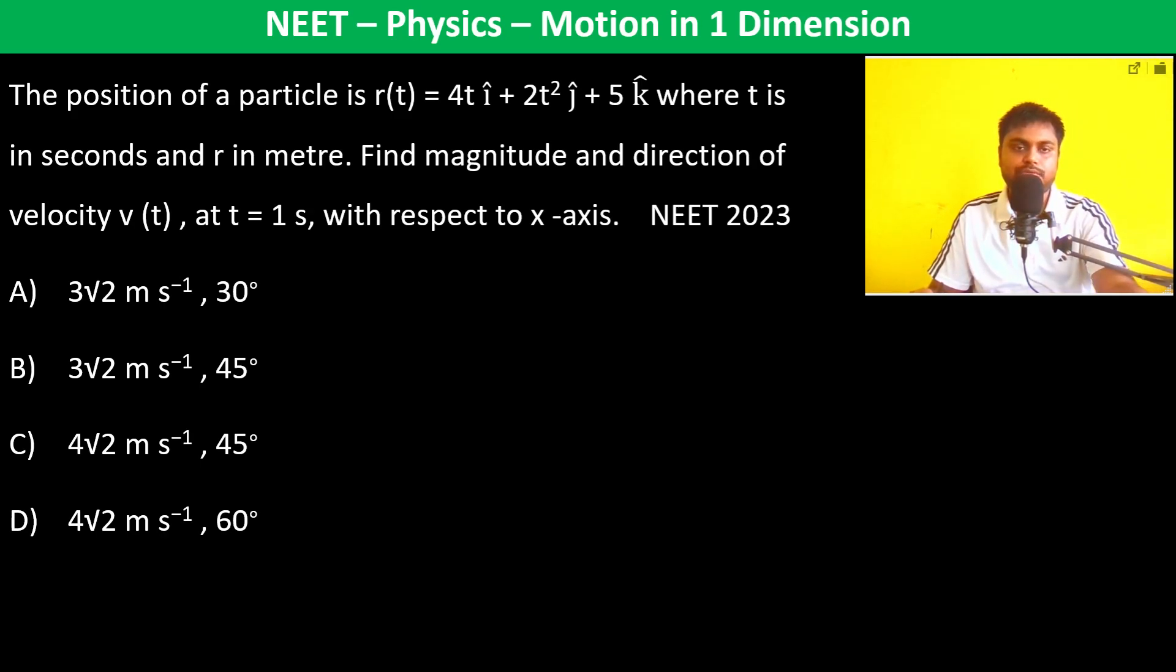The position of a particle is given by r(t) = 4t î + 2t² ĵ + 5k̂, where t is in seconds and r is in meters. Find the magnitude and direction of velocity v(t) at t = 1 second.